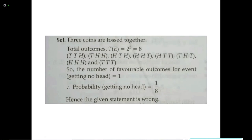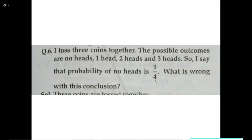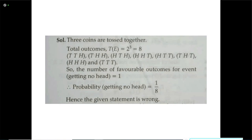According to the definition and formula of probability, the probability of no head is 1/8. But in the question it was calculated as 1/4. Therefore the probability given in the question is wrong. Hence the given statement is incorrect, because our answer using the proper formula and sample space is 1/8, not 1/4.